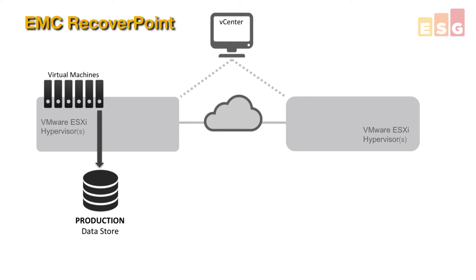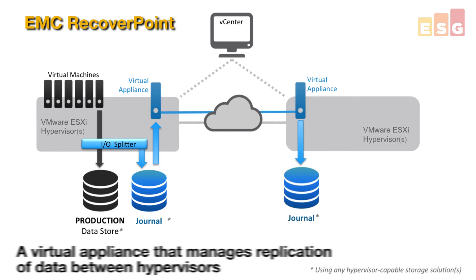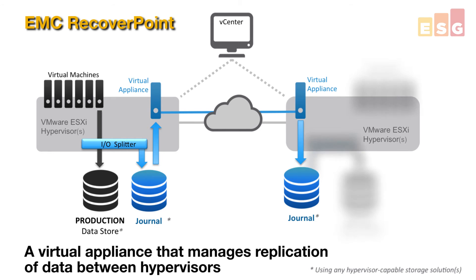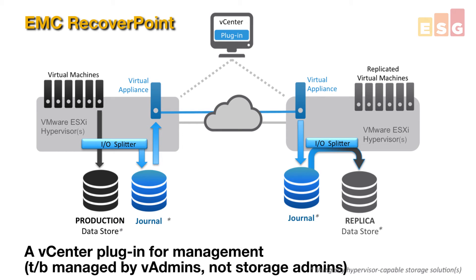This technology has three core components: an I/O splitter that transparently intercepts disk writes from the VMs, a virtual appliance that manages replication of data between hypervisors, and a vCenter plugin for management — because the solution is intended to be managed by V admins, not storage admins. Traditional storage-centric replication solutions would typically require matching physical storage arrays across the environment. Instead, EMC's new solution works with any storage that's supported by the hypervisor, because the virtual appliance runs within the hypervisor framework.